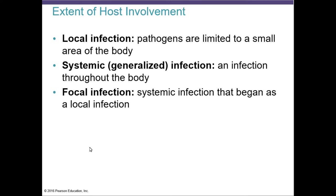When talking about extent of host involvement, there are three different classifications. If an infection is local, the pathogens are limited to a small area of the body — for example, an infected wound. Systemic or generalized infection is when the infection is throughout the body, affecting more than one or two sites, with signs of infection likely already present in the blood.